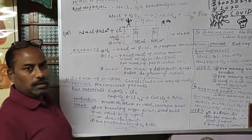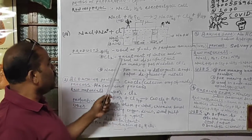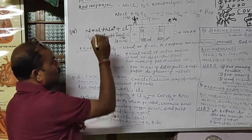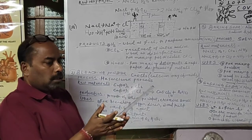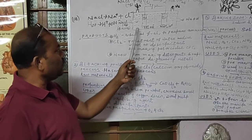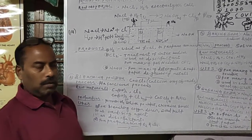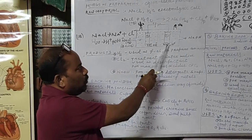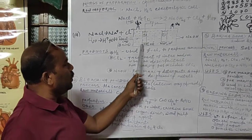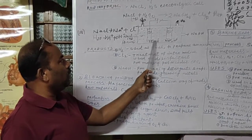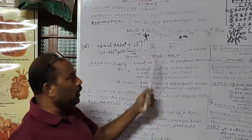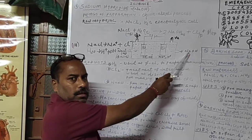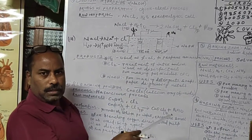Water in the brine also splits into H⁺ and OH⁻ ions. The positive ions — sodium and hydrogen — move toward the cathode, while negative ions — chloride and hydroxide — move toward the anode. Three products are formed: chlorine gas, hydrogen gas, and sodium hydroxide, which is the major product.